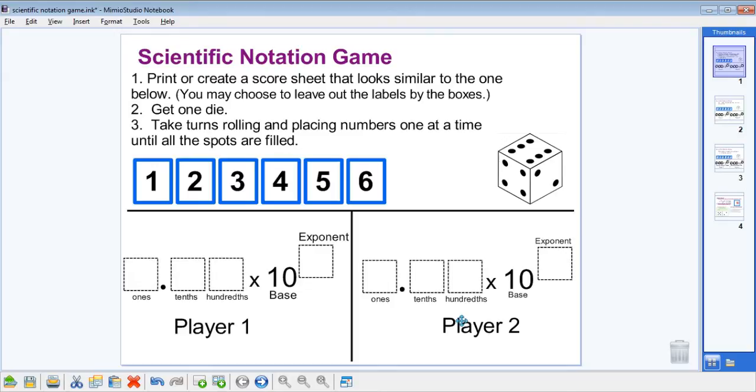You may choose to leave out the labels by the boxes if you wish. You'll need a number in the ones place, your decimal point, a number for the tenths place, something for the hundredths place, your base of ten, and an exponent box. Same thing for player two.